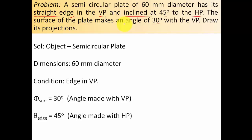The solution is divided into two parts. Part one is a demonstration of how the object is positioned with respect to the HP and VP, and what the initial assumption for step one should be — whether to begin with the front view or the top view. Part two is where we actually draw.